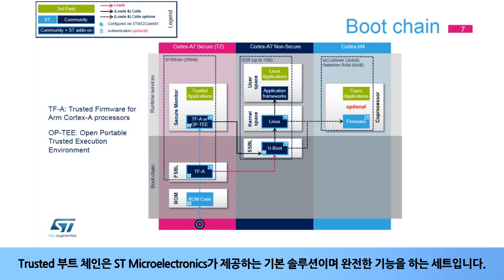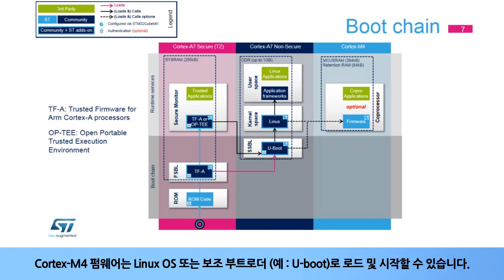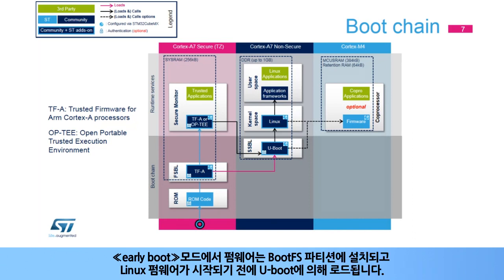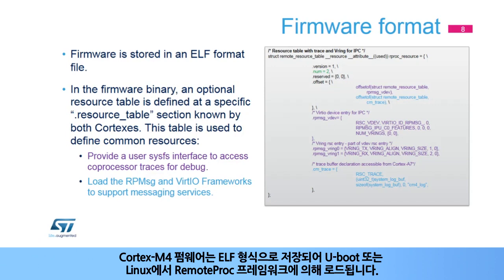The trusted boot chain is the default solution delivered by STMicroelectronics with a complete feature set. The Cortex-M4 firmware can be loaded and started by the Linux OS or by the secondary bootloader, for instance uBoot. In normal mode, the firmware is stored in the file system and is loaded by the Linux user land through the remote PROC file system interface. In early boot mode, the firmware is installed in the boot.fs partition and is loaded by uBoot before the Linux firmware starts. The Cortex-M4 firmware is stored in ELF format to be loaded by the remote PROC framework from uBoot or Linux.